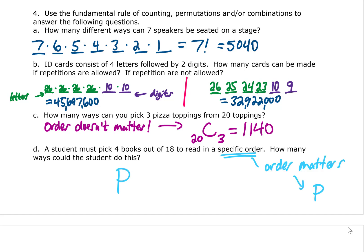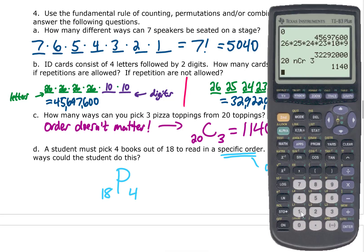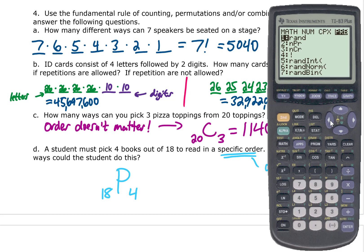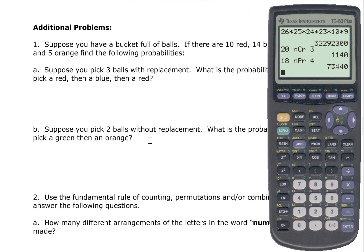So our permutation has a pool of 18 things to choose from and we are choosing four books. To type that into the calculator, I'm going to put 18 in first, go to math, arrow over to probability, and select the permutation option, then four. That gives us 73,440 permutations.